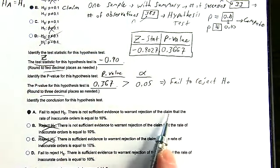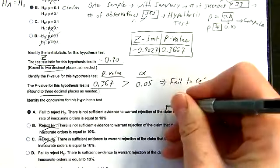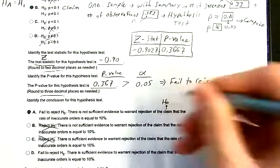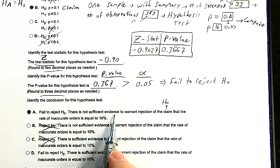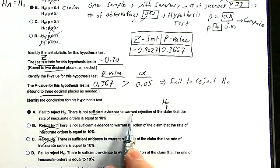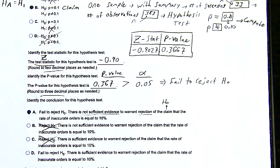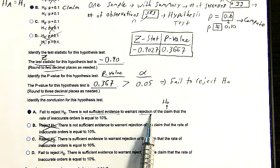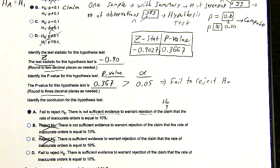Our claim is on H0 and we are failing to reject it. We can't say we accept it — we just say there's not sufficient evidence to reject the claim that the rate of inaccurate orders is equal to 10%.